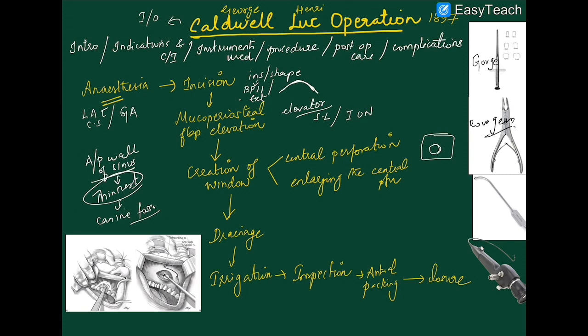First the gouge creates a central perforation, then rongeurs are used to increase its size. The window must be large enough so that at least your index finger can enter into the antrum — that is the minimum size criteria. You need to insert your index finger to palpate the sinus walls and check for any residual pathology. Window creation is done in two steps: central perforation first, then enlargement with rongeurs.